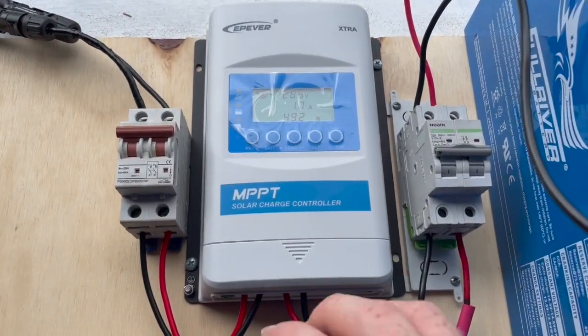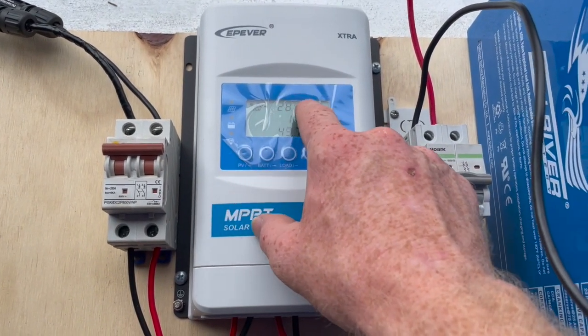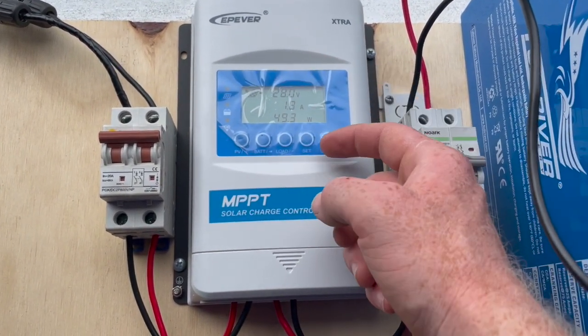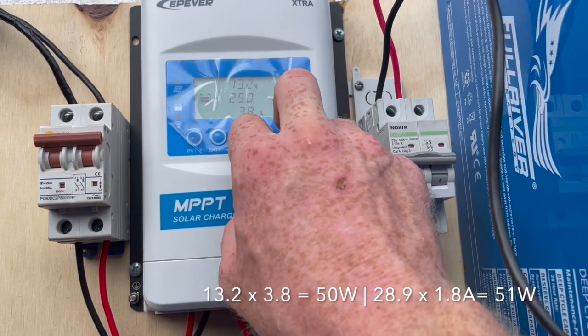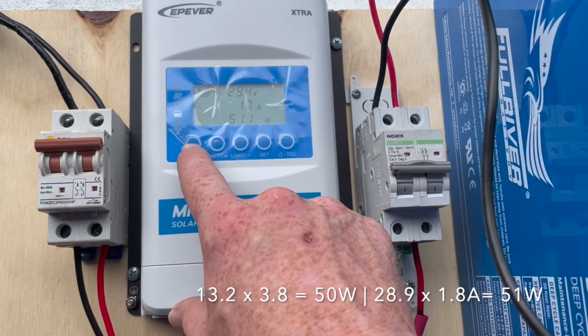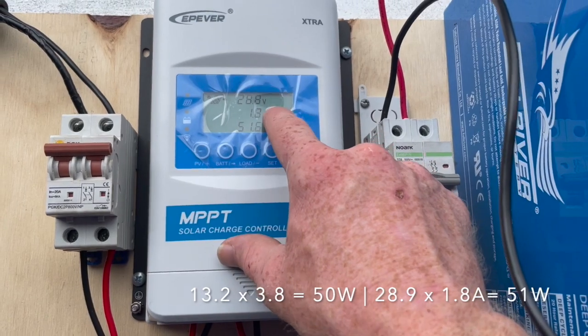An MPPT is able to take the higher voltage and push it down, which increases the amps out, so that volts times amps will equal what's coming in.